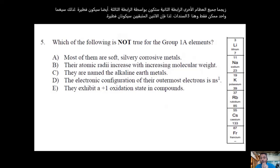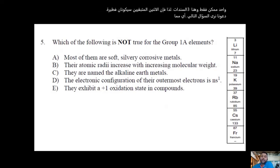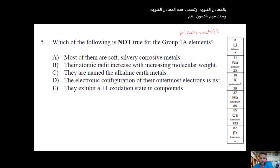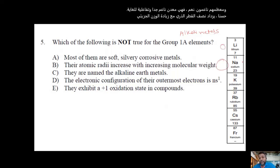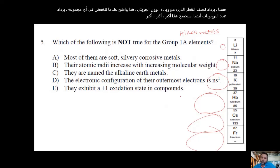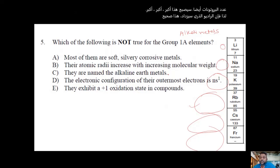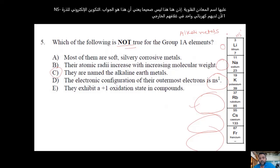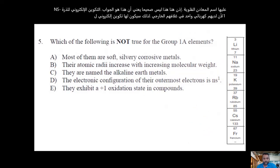Group 1A metals are called alkali metals. Most of them are soft and highly reactive. The atomic radius increases with increasing atomic number — going down a group, the atom gets bigger. They are called alkali metals, not alkaline earth metals, so that statement is not true and is the answer. Their electronic configuration is ns¹ and their normal oxidation state is +1.